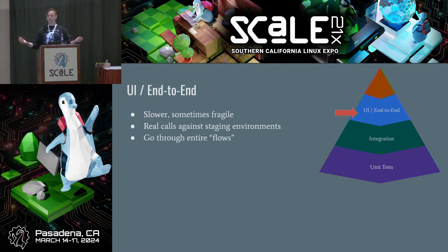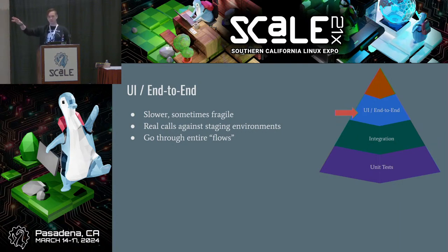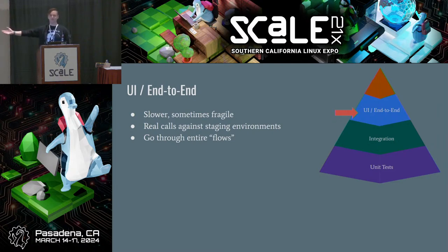UI end-to-end: if you have a UI, it should be instrumented. This used to be a very specialized thing — test engineers writing stuff with Selenium. Now it's very accessible; there are frameworks like Cypress, so if you can write a front end you can write front-end automation. This is going to be slow and often fragile because it's subject to changes in the UI. But it's invaluable compared to either manually going through every flow or not doing that and having your users test your software.